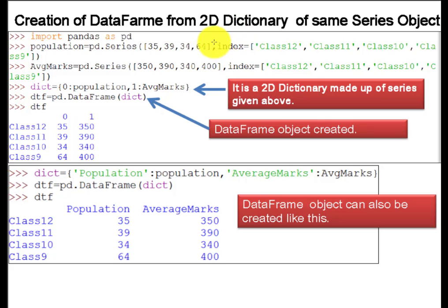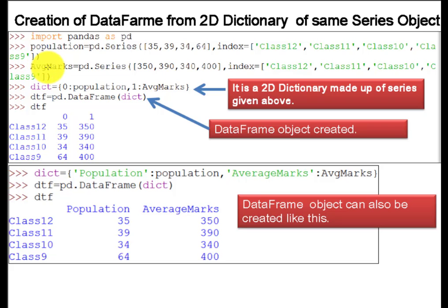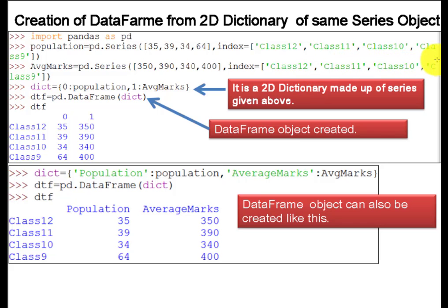The index values are class 12, class 11, class 10, class 9 — this index has been generated. The next series is for average marks. You write pd.Series and its values are 350, 390, 340, and 400. Its index is class 12, class 11, class 10, and class 9.